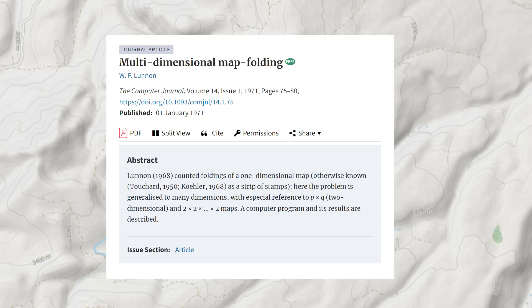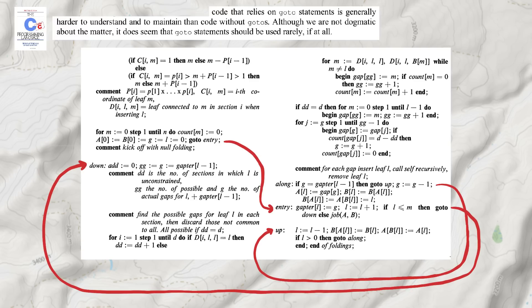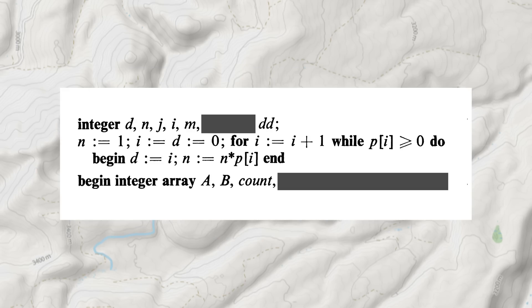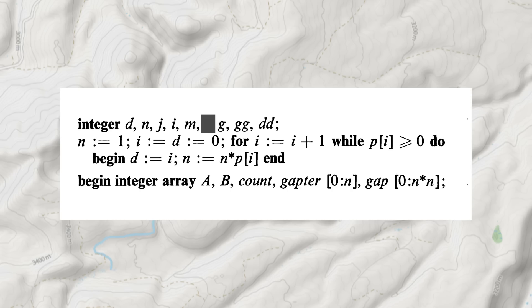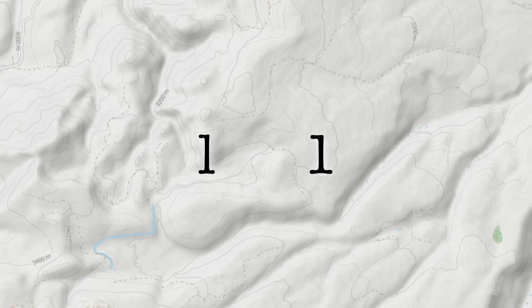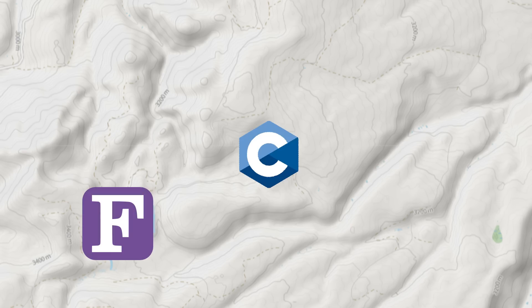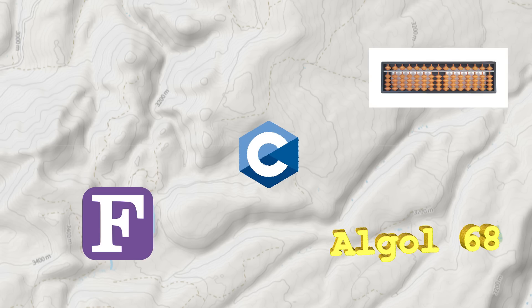I tried to write my program using pseudocode from the original map folding paper, but the pseudocode is almost entirely unreadable. We're talking recursion made out of go-to statements that branch off into other go-to statements, triple nested inline if statements, variables with names like lowercase g and lowercase gg, gap and gapter, and of course lowercase l — the letter that looks precisely like the number one on almost every monospace font used for coding, including most typewriters. This paper was published in 1968.